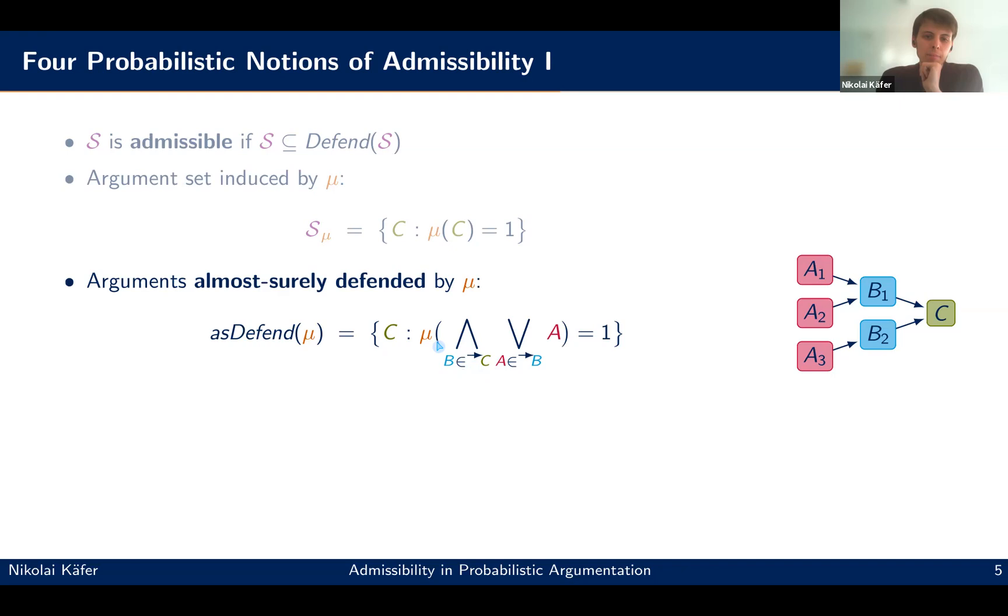And basically what we get here is we say that the distribution now almost surely defends an argument C, if all the events where C is defended, all these argument sets together hold with probability one. And with these two definitions, we can then formulate a very simple definition here of admissibility. We call this weakly admissible. So we just say that here the arguments that are induced by the distribution need also be almost surely defended by the distribution.